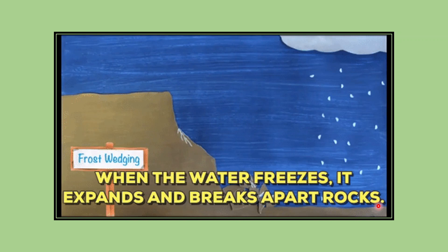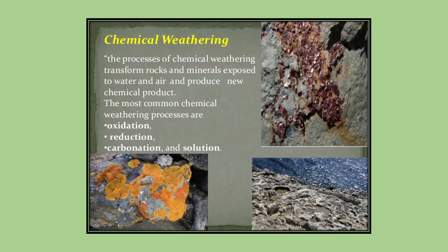Next, we come to chemical weathering. Some rocks disintegrate when they come in contact with water or atmospheric gases. The minerals in the rocks undergo changes in their chemical composition and appearance, and also become weak. A weak rock automatically breaks into smaller fragments and leads to the formation of soil. Chemical weathering can be of four types: oxidation, carbonation, solution, and hydration.